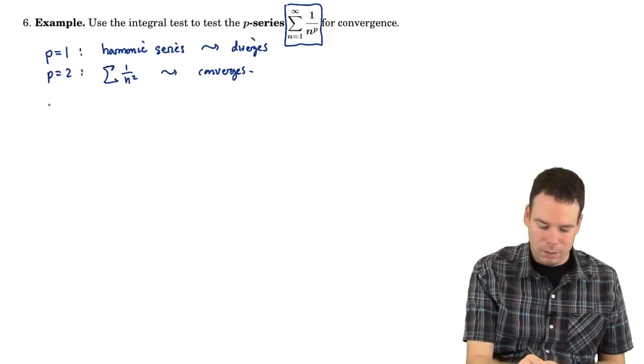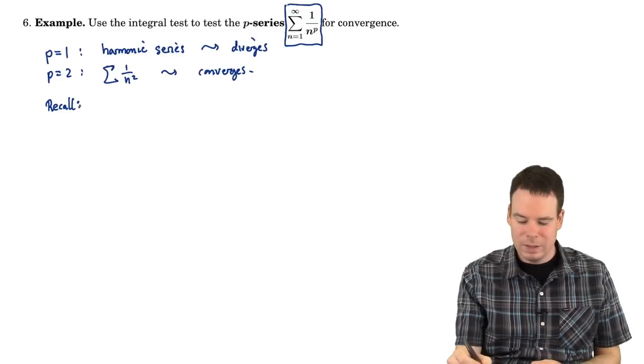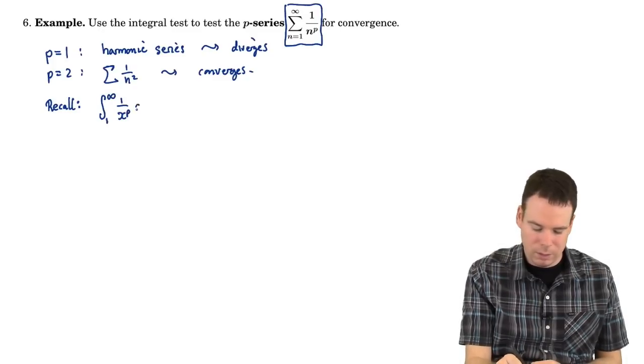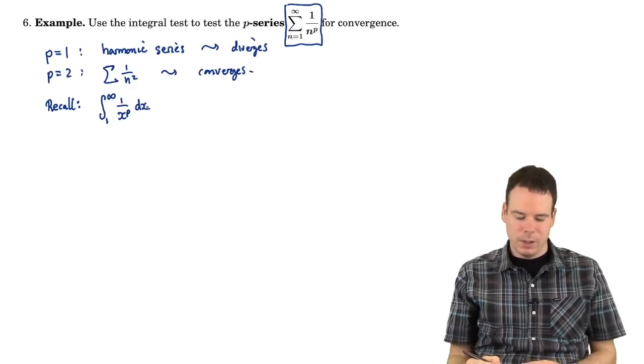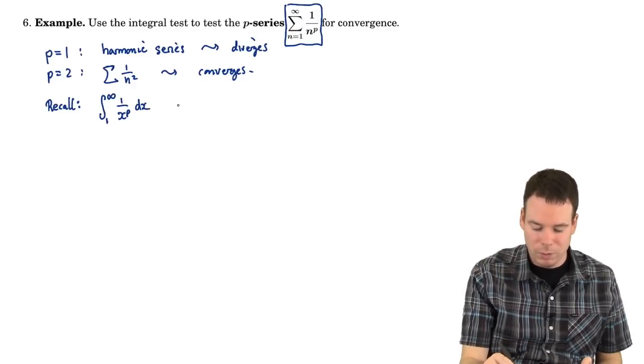Now here we can maybe make a connection. We've seen something like this before. We saw it actually in the context of improper integrals: 1 over x to the p dx. And here the question is, when does the improper integral converge or diverge? And we've answered this.